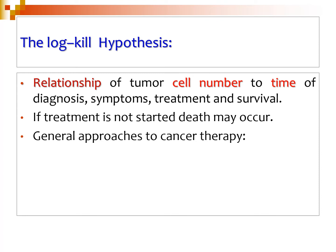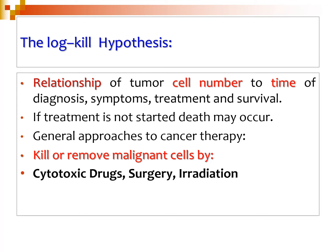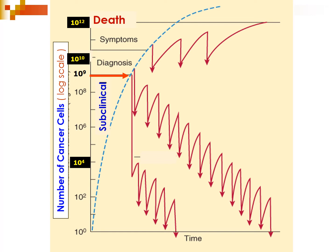The general approach to cancer therapy is to either kill or remove the malignant cells by cytotoxic drugs, by removing them surgically, or by destroying them through irradiation. These are the three most important methodologies to deal with malignant cells, as illustrated in the log kill hypothesis diagram showing the relationship of cell number to diagnosis, symptoms, and treatment.